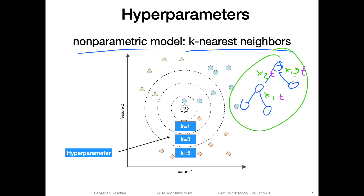Long story short, the hyperparameters of our k-nearest neighbor algorithm are the options for the number of neighbors — for example, k. Another one would be the distance metric, for example the Manhattan distance, Euclidean distance, or some other distance. This would be another option that we have to choose as a practitioner. The number of neighbors is not something the k-nearest neighbor model learns from the data; you have to set this option before you run it.